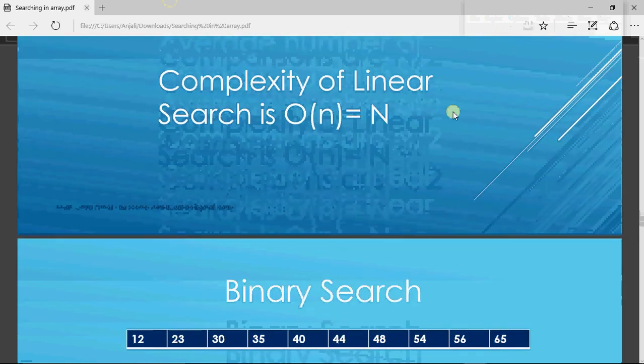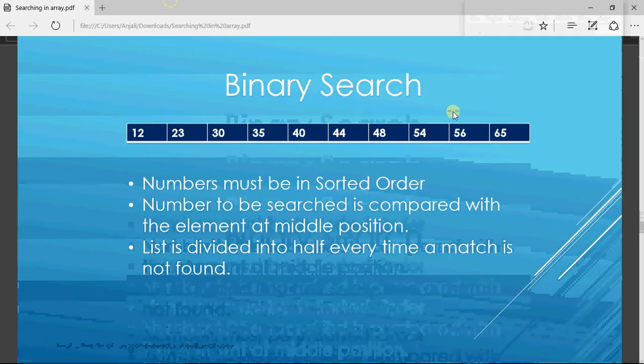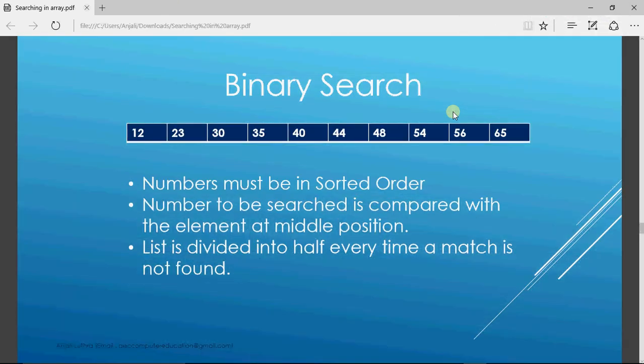Now comes binary search. Binary search is a technique much faster than linear search, and we use it when we know the numbers are already in sorted order. The precondition for binary search is that elements must be in sorted order — either ascending or descending. In this example we are taking numbers in ascending order.